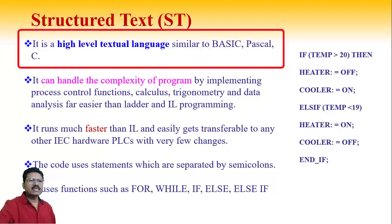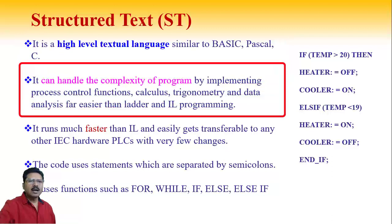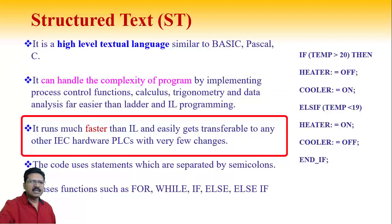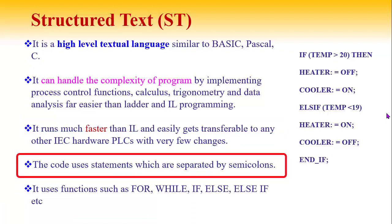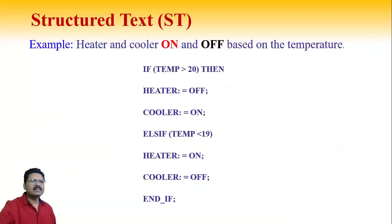Next is Structured Text. It is a high-level textual language similar to BASIC, Pascal, C, C++, etc. It can handle program complexity by implementing process control functions, calculus, trigonometry, and data analysis — far easier than Ladder and Instruction List. It runs much faster than Instruction List and is easily transferable to other PLC hardware with very few changes. The code uses statements separated by semicolons, and it uses functions such as FOR, WHILE, IF, ELSE, ELSE IF, etc.